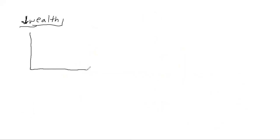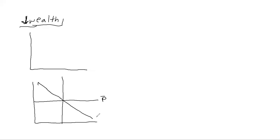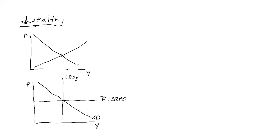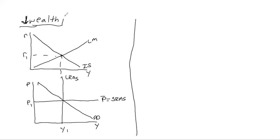We have our IS-LM graph and our AS-AD graph. Let's copy it over quickly. There's our aggregate demand, here's our long-run aggregate supply, and P-bar is our short-run aggregate supply. Prices, interest rates, and output. Icy slopes and lofty mountains. And our equilibriums: Y1, R1, and P1.